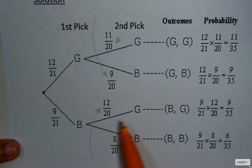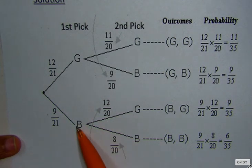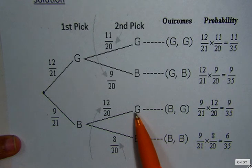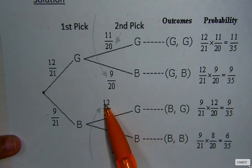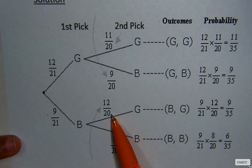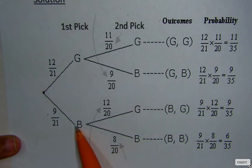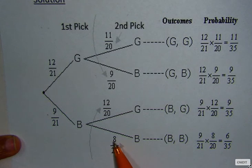Let's see the other branches. If he had picked a blue the first time, so the second time now he's picking a green, and there are 12 out of 20 green. And if he had picked a blue in the first time, now the blue will be one less, so now you have only 8 out of 20.